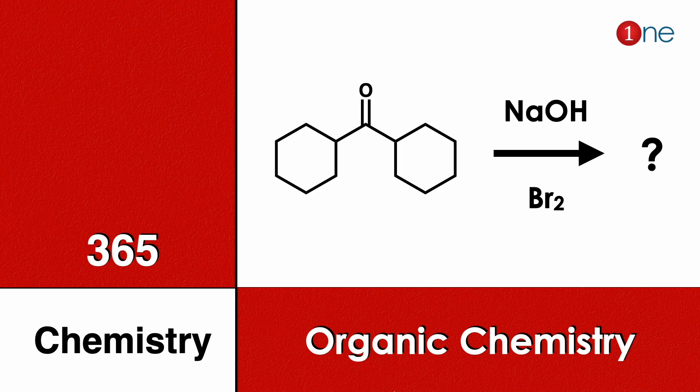Welcome to One Chemistry. This is the 365 Chemistry Series: organic chemistry questions. Here you have a ketone attached on both sides of cyclohexanone. You are using sodium hydroxide and bromine. Find what will be the final product.